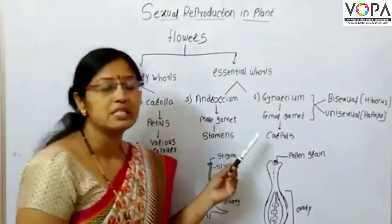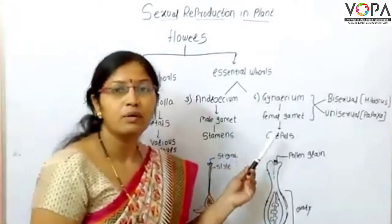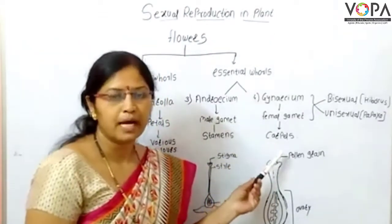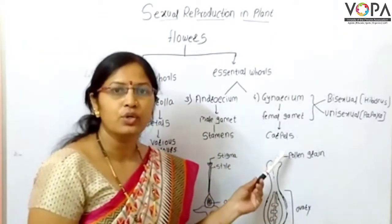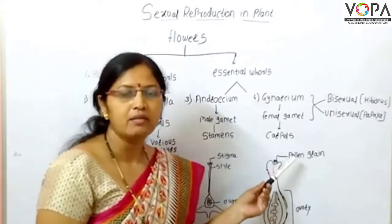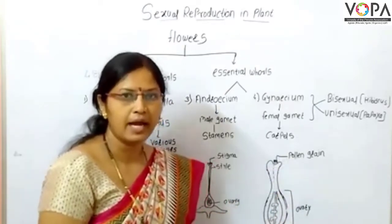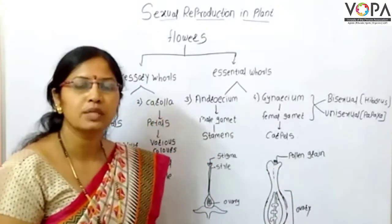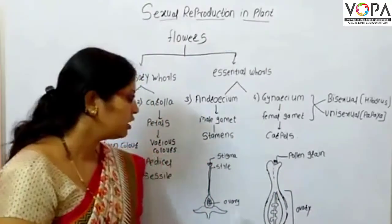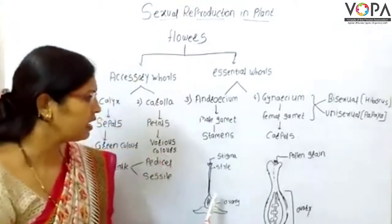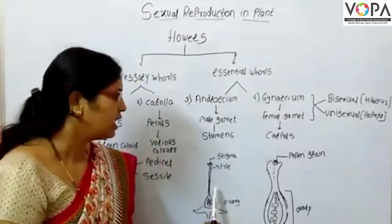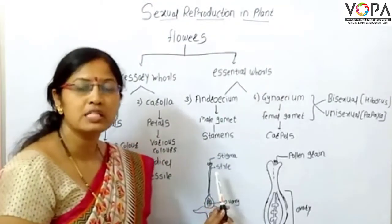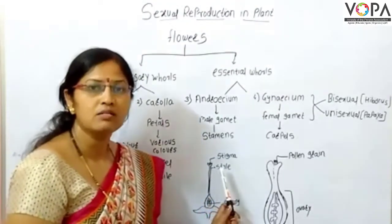Gynoecium is the female part of the flower. It consists of carpels, which may be united or separate. The basal part of the carpel is called the ovary, and the tip of the ovary is called the stigma.